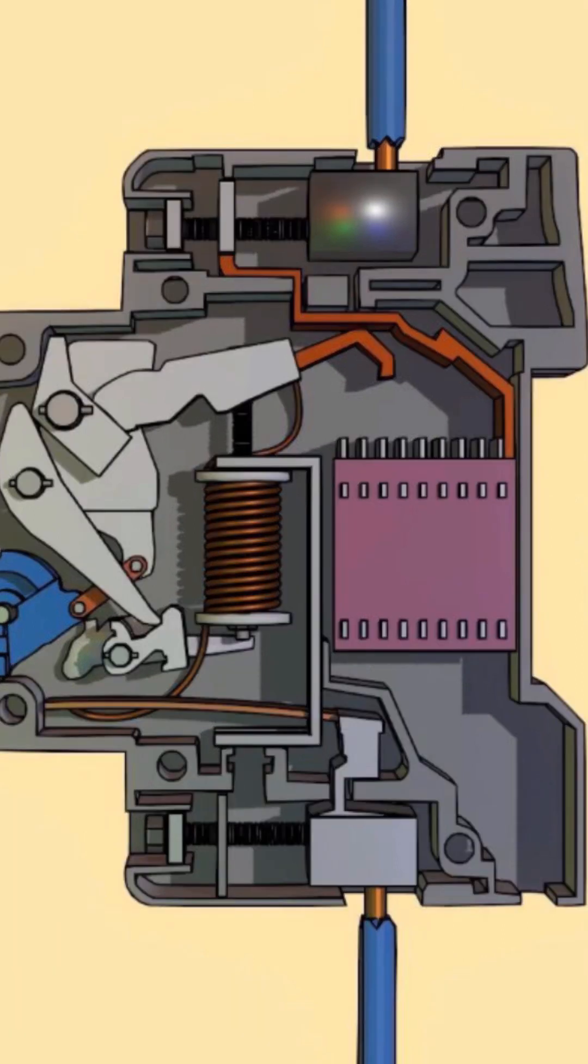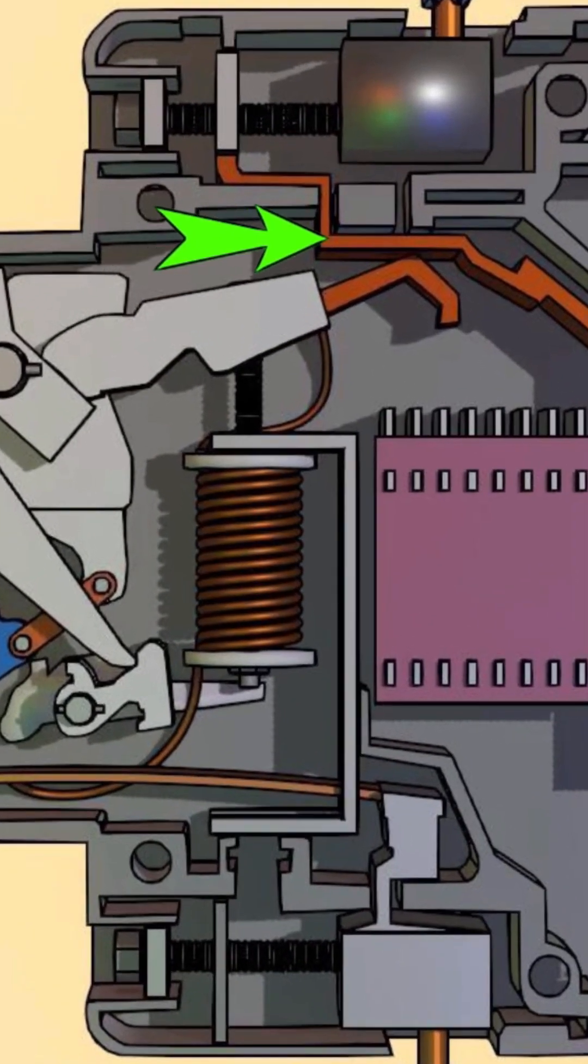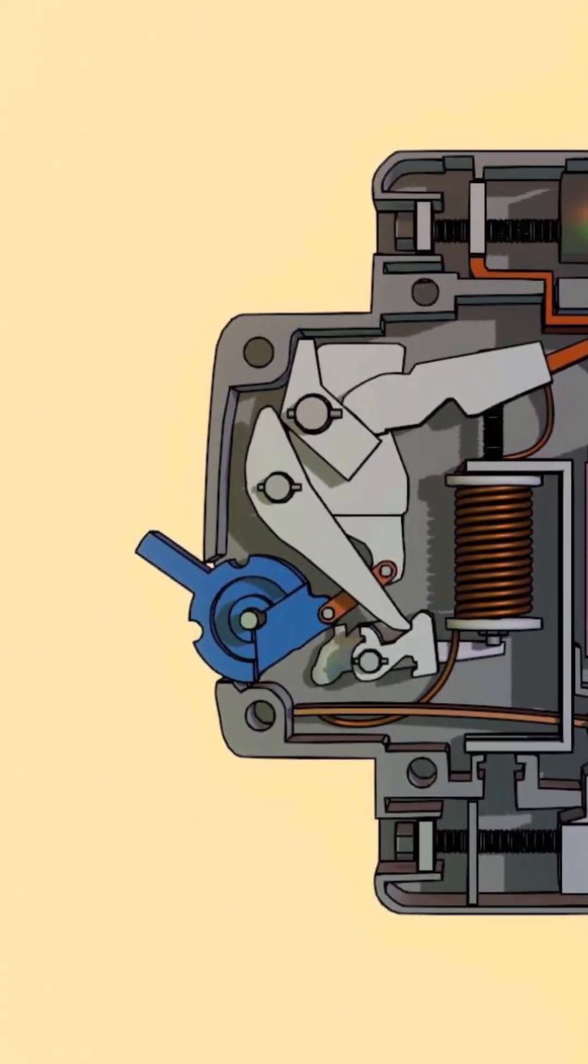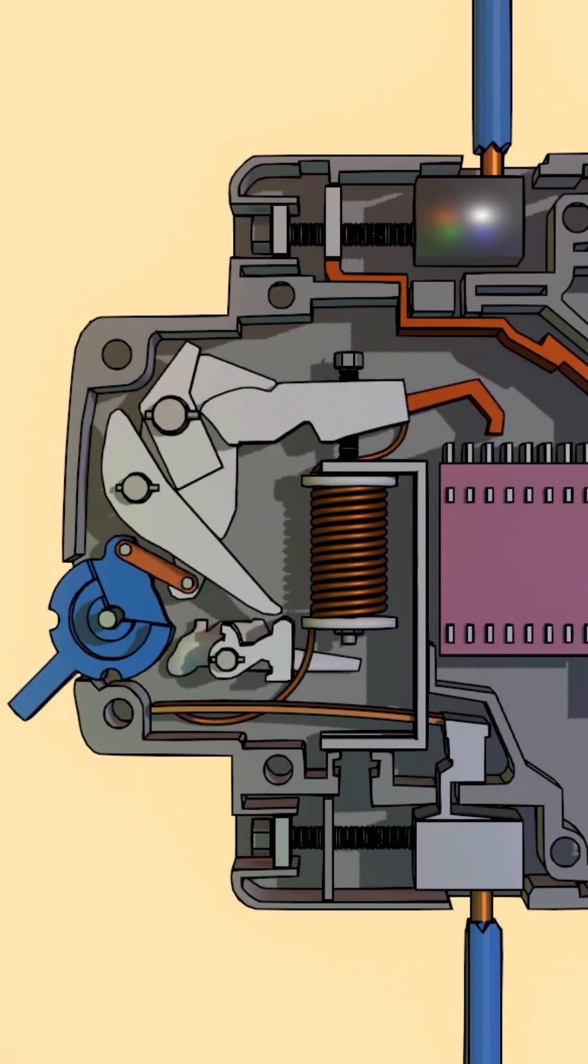During switch on condition, current starts flowing through this part. This is the fixed contact and this is the moving contact. When we pull down the switch, it rotates accordingly and the moving contact detaches from the fixed contact, breaking the circuit. That is manual operation.